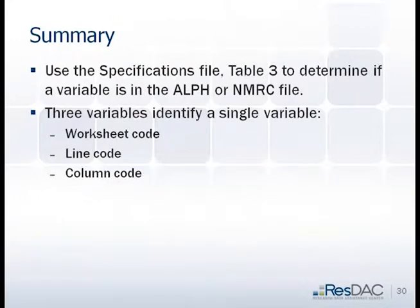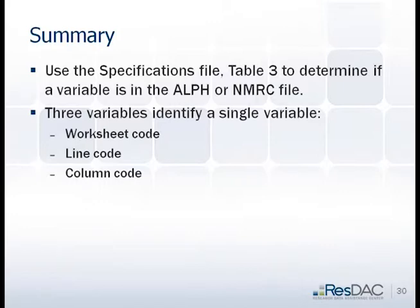The main files we're going to use to identify a variable are the specifications file — which tells us if it's alpha or numeric — and the worksheet code table to give us the actual codes. To summarize: we need three things to identify any single variable — the worksheet code, the line number, and the column number.